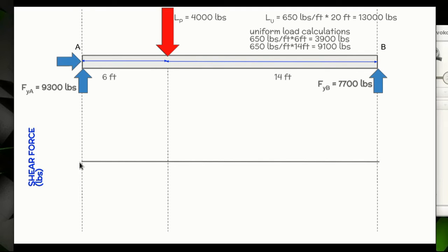Give yourself some space underneath this diagram. Draw a line from left to right, this is going to be your zero line, and label it shear force in pounds. The first two things we'll look at: we have a reaction force pushing up, so we go from 0 to 9,300, and then we have a uniform load for 6 feet that's 3,900 pounds going down. So we go from 0 to 9,300, then 9,300 minus 3,900 equals 5,400, so we put a point right here and draw a straight line connecting those.